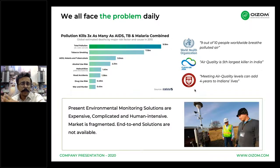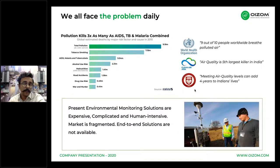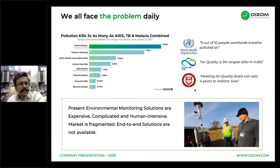In India alone, 1.2 million deaths happen where 9 out of 10 people breathe polluted air, which reduces 4 years from their lifespan. Air pollution kills three times more people than AIDS, TB, and malaria combined.